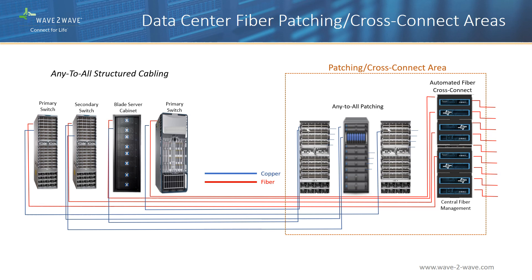A cross-connect area can also be located at the end-of-row or middle-of-row position to serve equipment in that zone, or an HDA can serve multiple rows of cabinets in larger zones. Its purpose is to provide network administrators ultimate flexibility of the optical fiber infrastructure layer so as to better utilize Layer 1 and higher equipment assets. By adding programmable fiber cross-connects, unused switch and server ports are kept to a minimum, since equipment is purchased based on the number of server ports requiring connections rather than the number of cabinets.